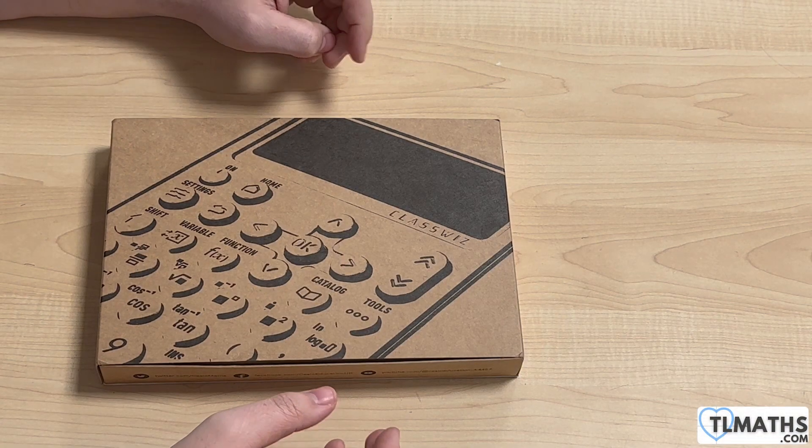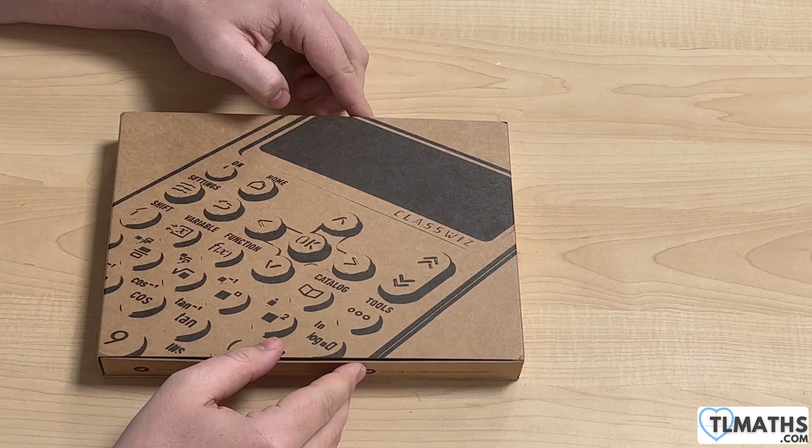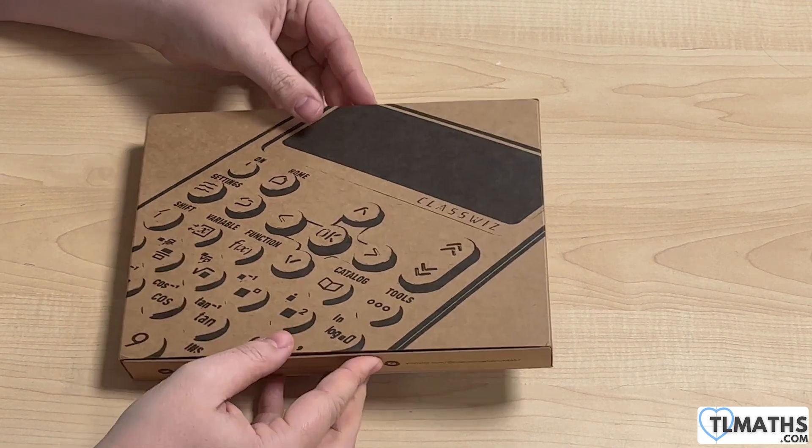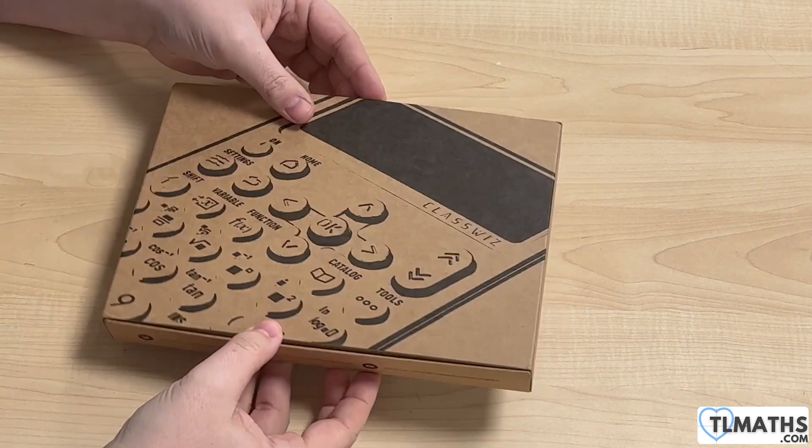So this is unboxing the new Casio ClassWiz, new calculator for A-level maths. Got it in this nice box with the same picture underneath.